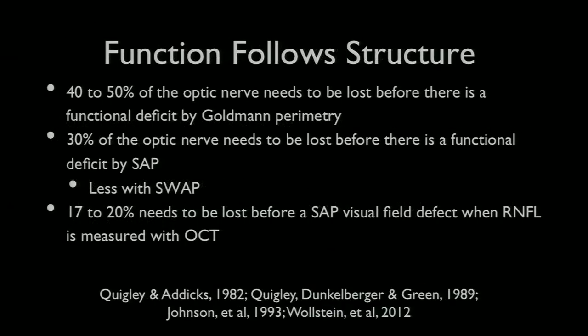And there have been a number of different studies since that time that show that you have to lose a fair amount of neural tissue before you get a visual field abnormality. And that, in fact, it's not until you lose as much as 40 or 50% of the optic nerve tissue that you have a Goldman visual field abnormality, maybe 30% for automated perimetry. And using OCT, we found that it was about 20% of the nerve fiber layer that had to be lost before a visual field defect with automated perimetry is detectable.